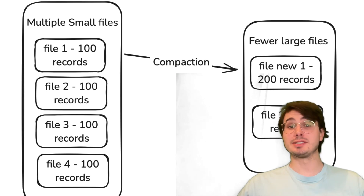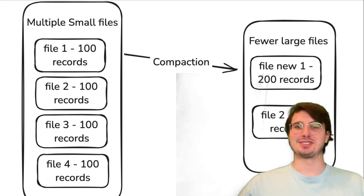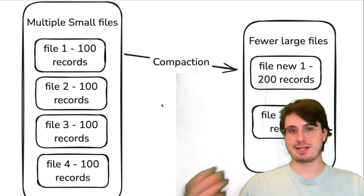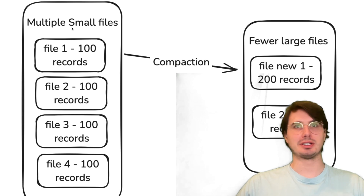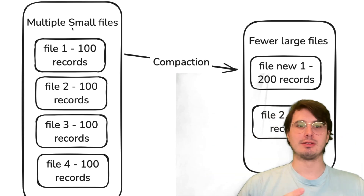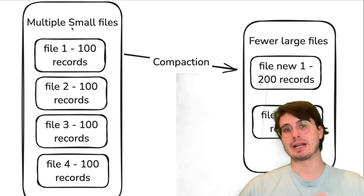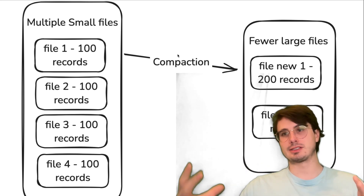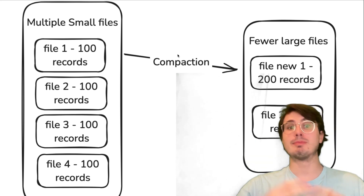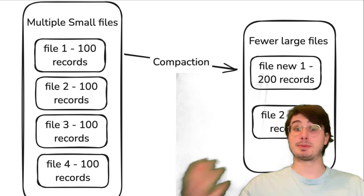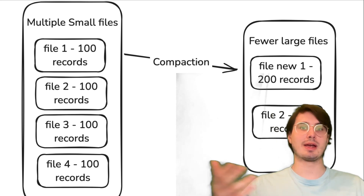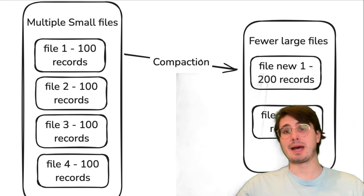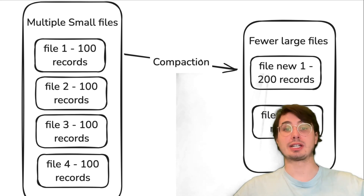Next is maintenance and table management — the less sexy but still important actions you'll need to take to keep your Iceberg tables running smoothly. First, compaction and optimization: compaction condenses multiple small files into larger files to keep you in that 100 to 500 megabyte range. Scheduling periodic data file rewrites and manifest merges ensures your data stays in the most optimized file format. You can use Iceberg's built-in functions — rewrite data files, rewrite manifests, and expire snapshots — to help condense these files and discard old snapshots that are no longer useful.